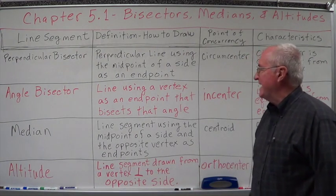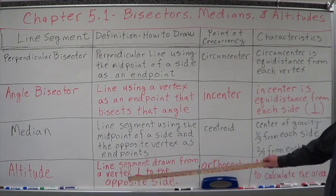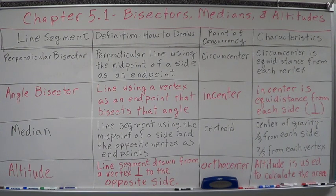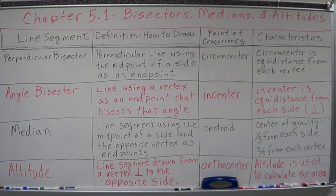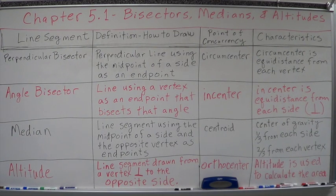The last one is the altitude. It's a line segment drawn from a vertex perpendicular to the opposite side. Its point of concurrency is the orthocenter. The altitude is used to calculate the area — that is its significance.